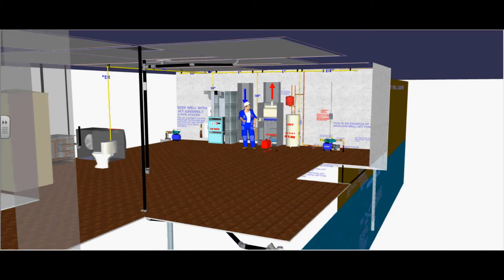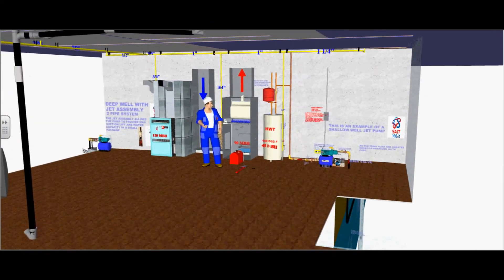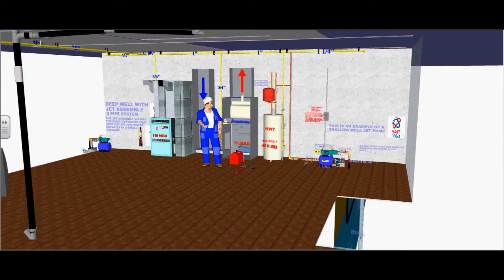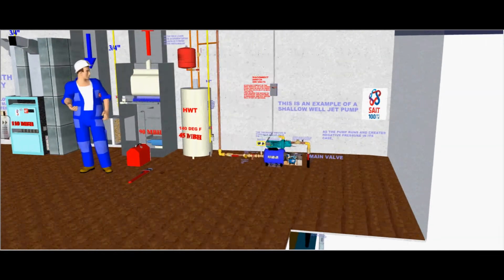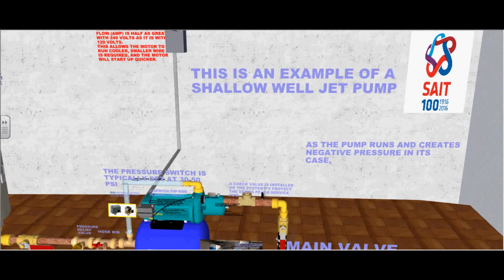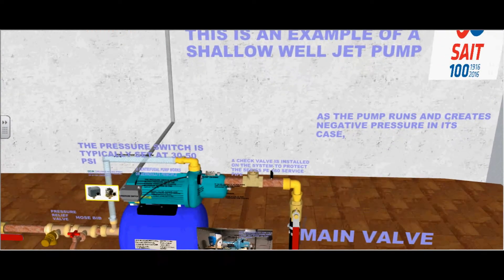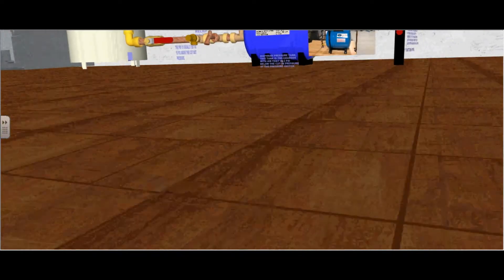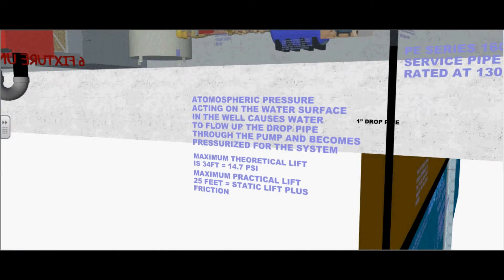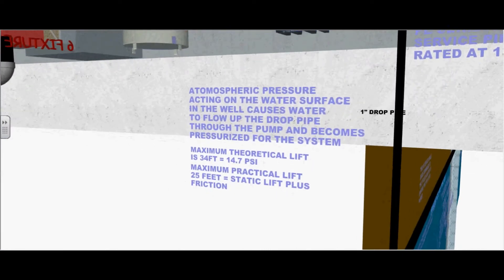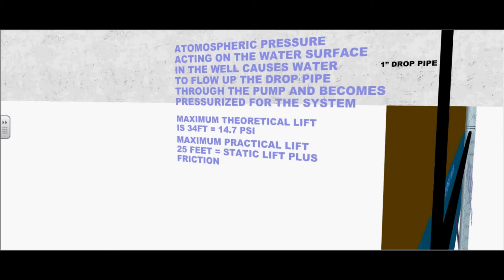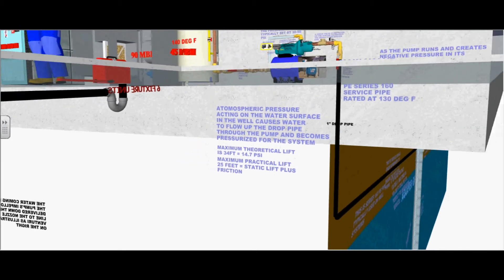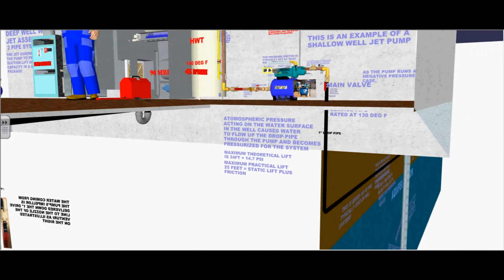Let's follow this polyethylene service pipe into the mechanical room. Here is an example of a shallow well jet pump. As the pump runs and creates negative pressure in its pump casing, this is where the volute is cased. Atmospheric pressure acting on the water surface in the well causes water to flow up the drop pipe through the pump and becomes pressurized for the system. There is an example of maximum and practical lift.